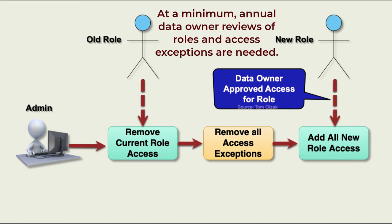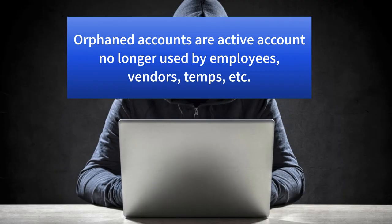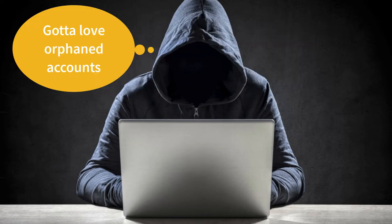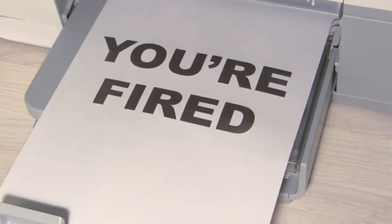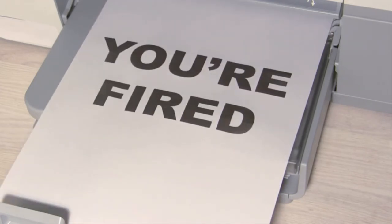If procedures for managing role movement and assignment are not meticulously followed, additional access can be missed, enabling unknown and unwanted access to administrative tasks. Orphaned accounts are user, service, or application accounts that exist in directory services and are still active. In organizations with solid termination practices, this should never happen, with accounts disabled within 24 hours after the employee leaves the building for the last time.